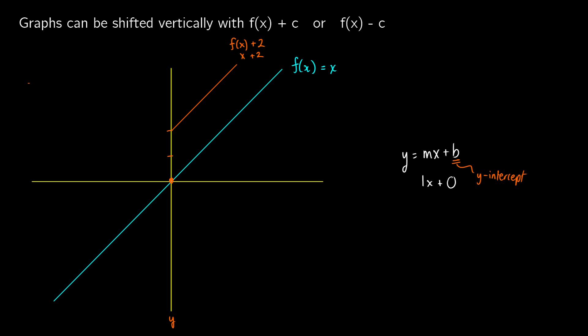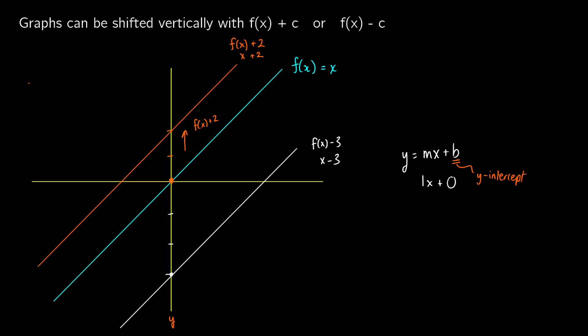We get the same graph shifted two units up. This is when we take f of x and add 2 to it. So if we add any real number c to f of x, we're going to shift the graph c units upward. What if we take something like f of x minus 3? That equals x minus 3, meaning we're shifting the graph down three units. So if we subtract any real number from f of x, we're going to shift the graph down that many units. This is vertical graph shifting — usually one of the more straightforward ones.